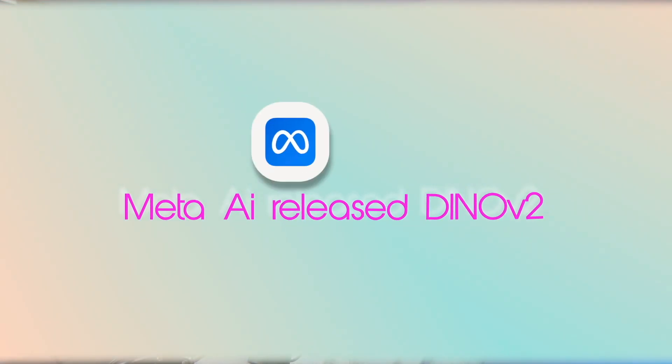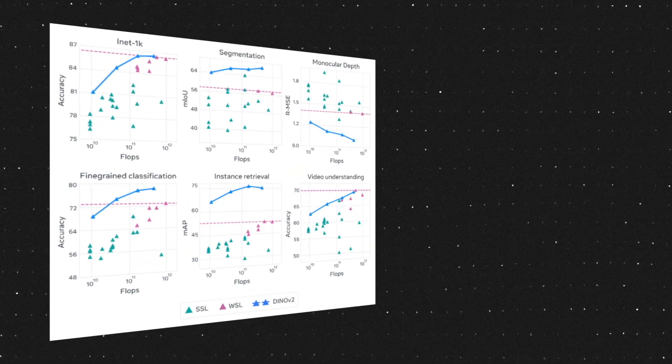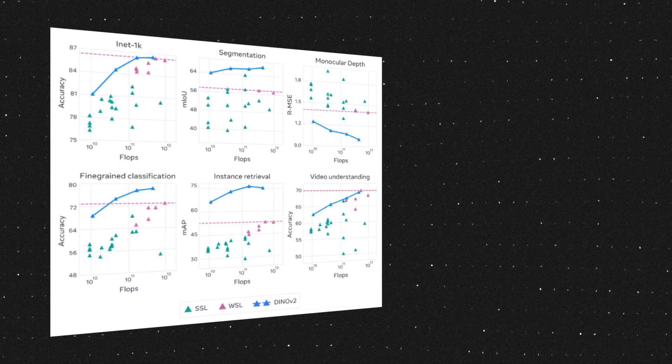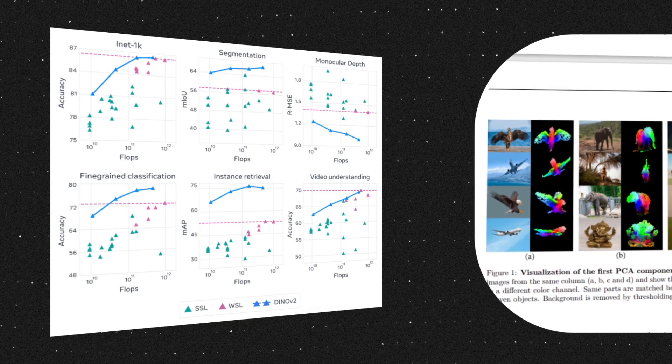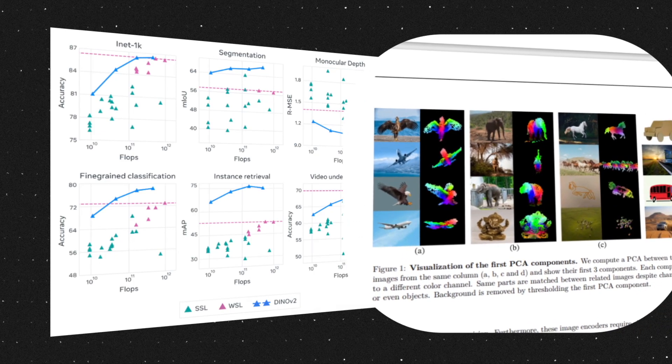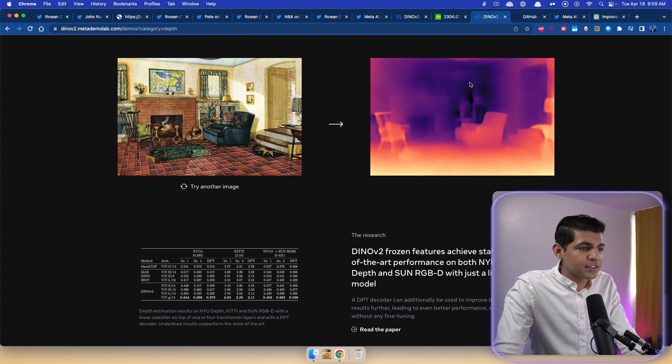Moving to the most important news of the day: Meta just released DINO v2. DINO v2 is a state-of-the-art computer vision model that uses self-supervised learning to achieve remarkable performance across various tasks. Unlike traditional models that rely on labeled data, DINO v2 learns from any collection of images. With this model you can do depth estimation, semantic segmentation, and instance retrieval.